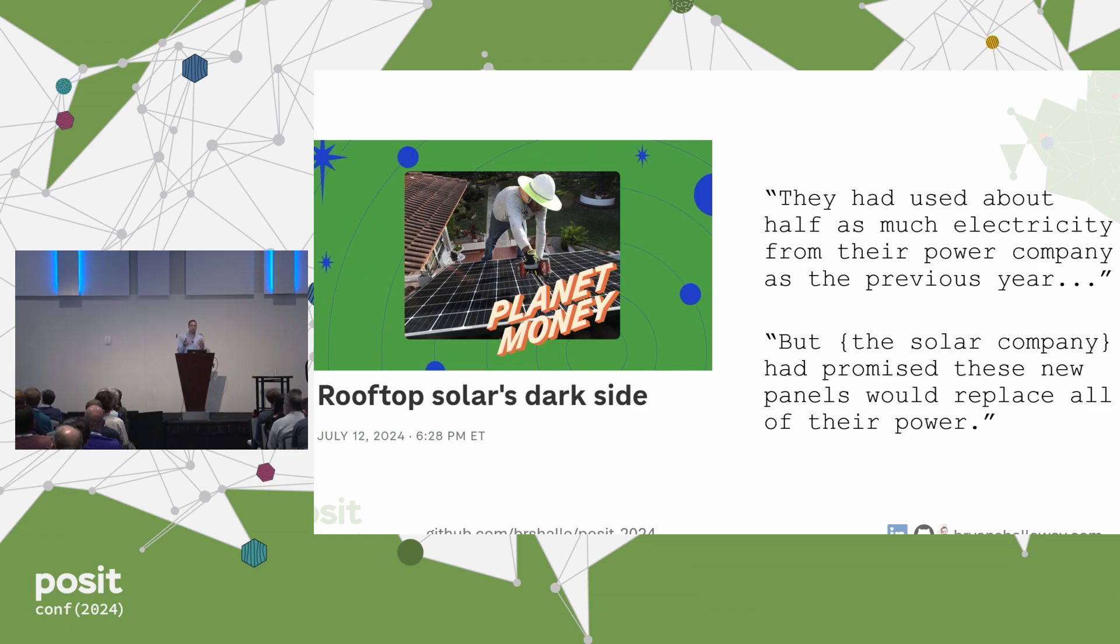This represents clearly a poor prediction in terms of how much energy was going to be consumed or how much energy was going to be produced by the panels. But it's not just bad because it's inaccurate. It's also bad because the solar company hadn't provided any notion of the range of potential outcomes that might come from installing these panels. They provided the couple with a very narrow picture about what would happen.